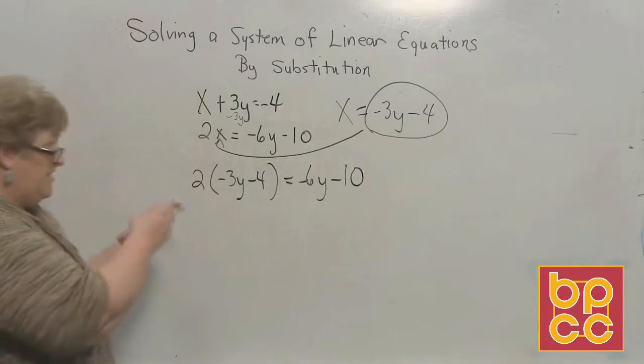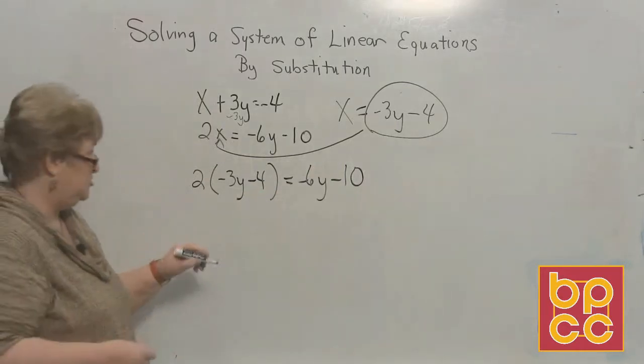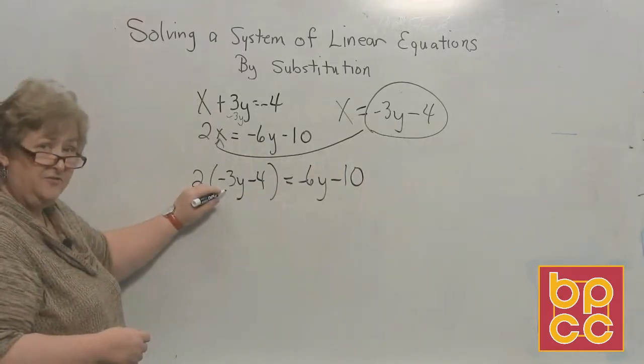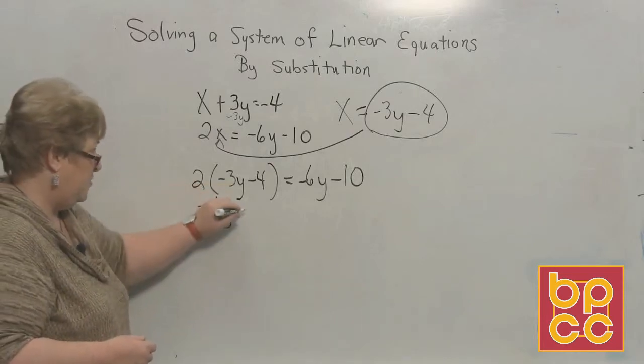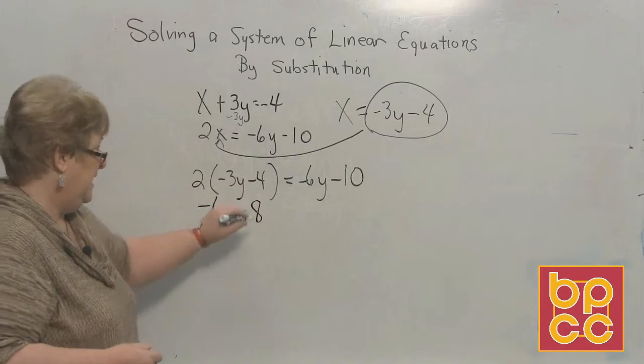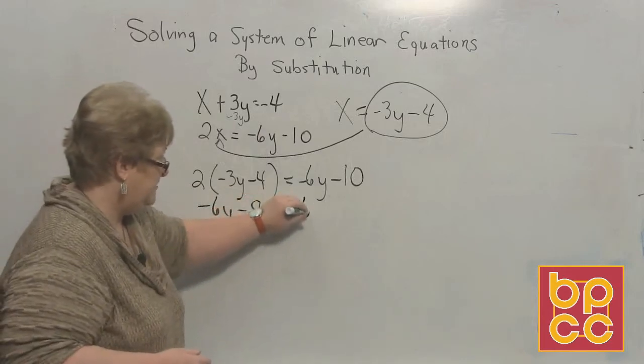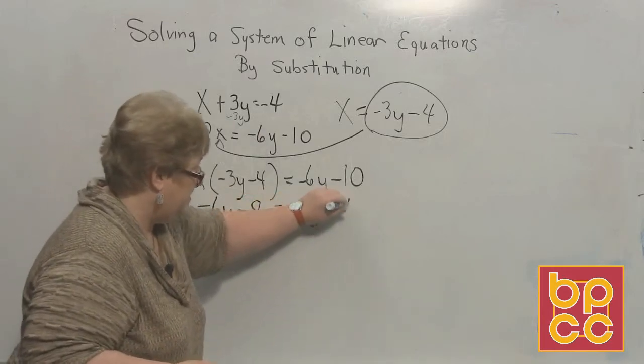Alright. Well, we've got a distribution over here, so let's distribute. 2 times a negative 3 is a negative 6y. 2 times a negative 4 is a negative 8. And over here, we have a negative 6y minus 10.